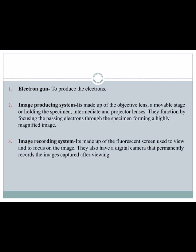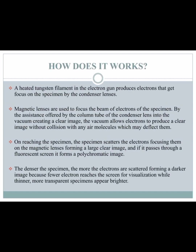A heated tungsten filament in the electron gun produces electrons that are focused on the specimen by the condenser lenses. Magnetic lenses are used to focus the beam of electrons on the specimen, assisted by the column tube of the condenser lens, into a vacuum, creating a clear image. The vacuum allows electrons to move without collision with any air molecule.